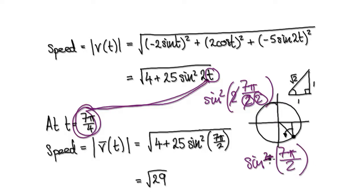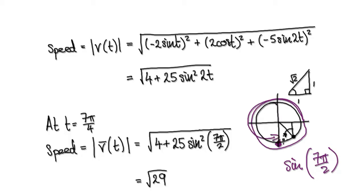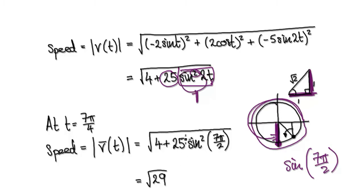Let's concentrate on sine(7π/2). Counting 7 lots of 90 degrees around the unit circle, the dot ends up here. Sine is concerned with the height, and at that position the height is negative 1. So sine(7π/2) = -1, and (-1)² = 1. That gives 25 times 1 = 25, plus 4, so the speed is root 29 at time t = 7π/4.